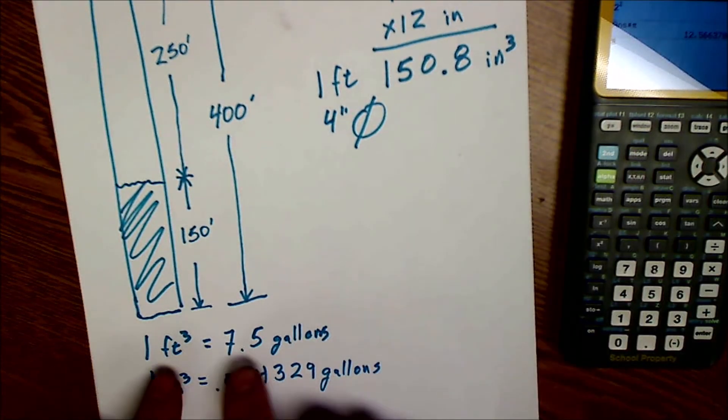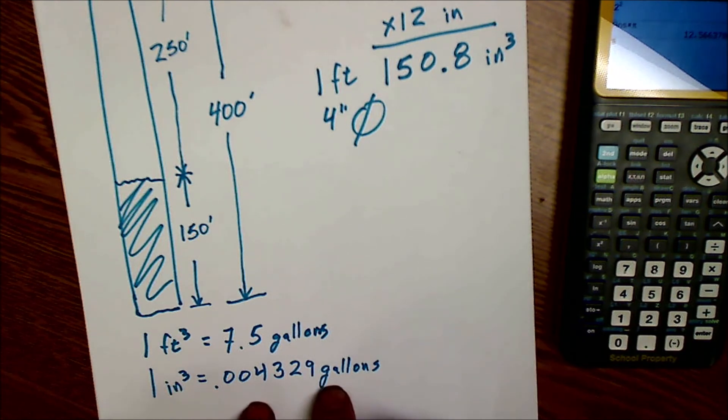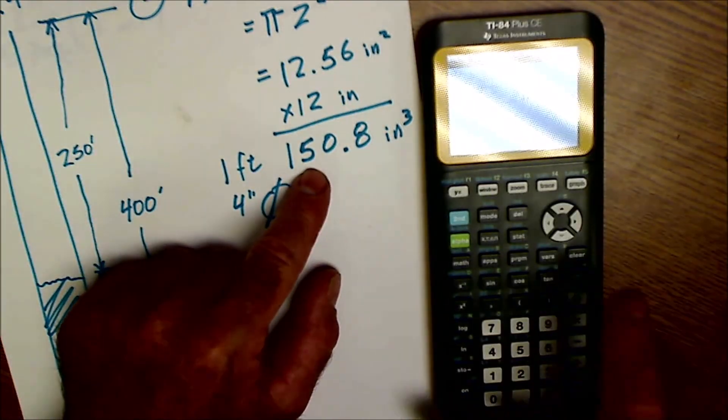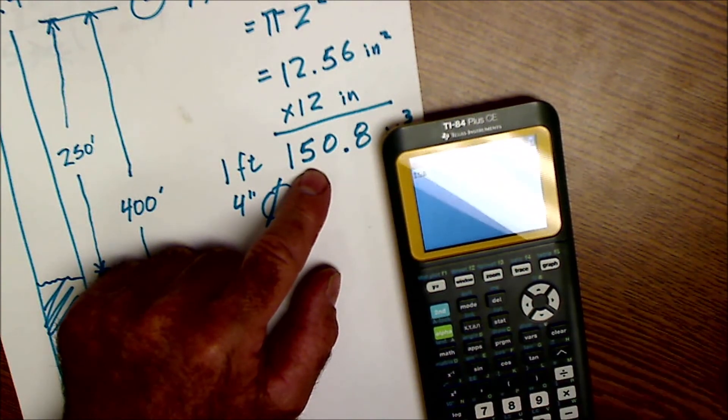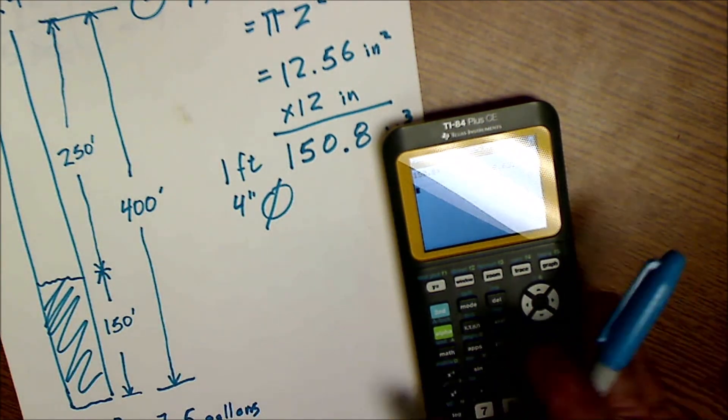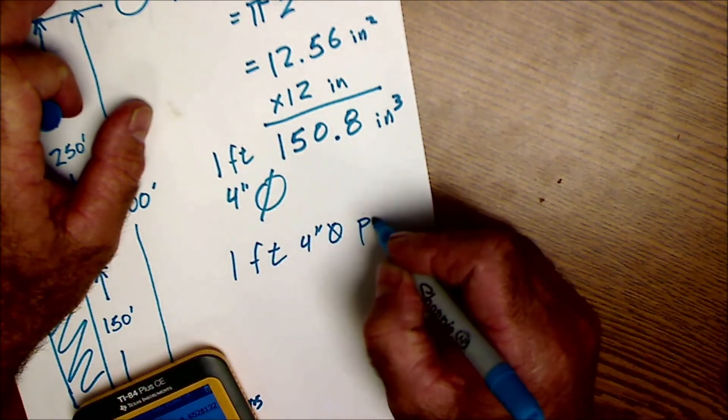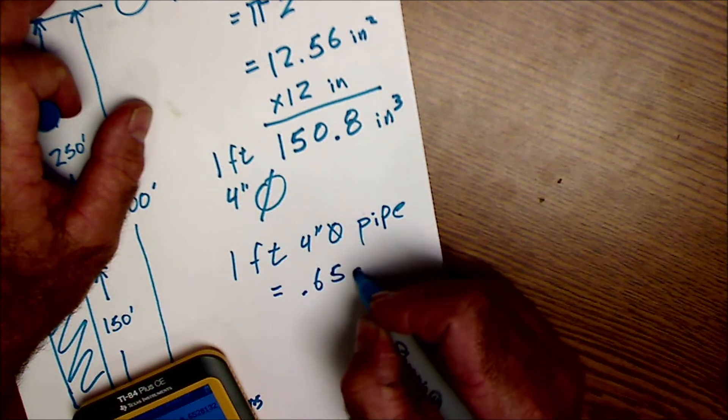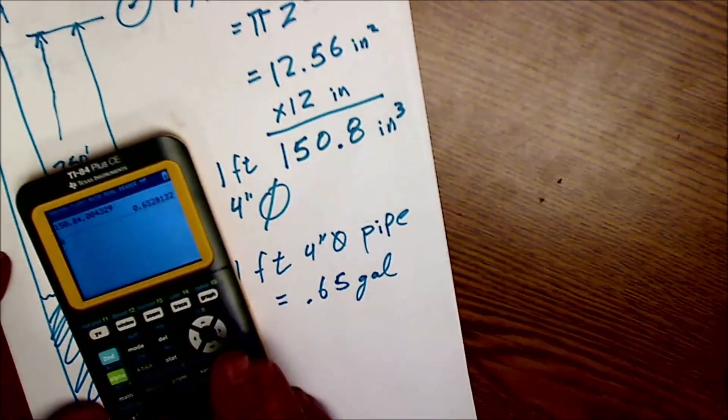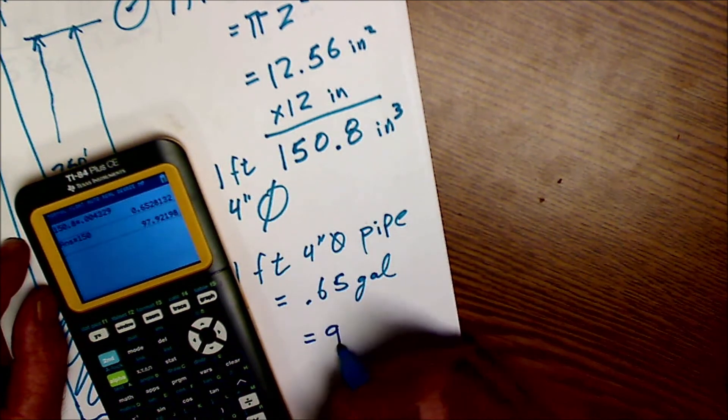Then you need to know that one cubic foot is 7.5 gallons, or you could look up one cubic inch as 0.004329 gallons. So one cubic inch is that many gallons. I have this many cubic inches in a foot, so I'm going to take that 150.8, multiply it by the 0.004329, and I'm going to get 0.65 gallons. So one foot of pipe, one foot of 4-inch diameter pipe, is equal to 0.65 gallons. And then I have this much water, 150 feet of it, and this is one foot, so I'm going to take that 0.65 gallons, multiply it by 150 feet, and I'm going to get 97.9 gallons. So I'm just going to round that up to 98 gallons.